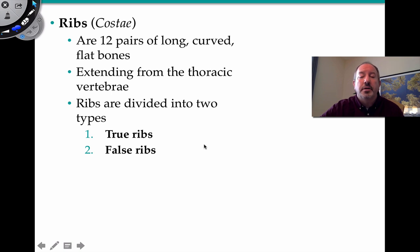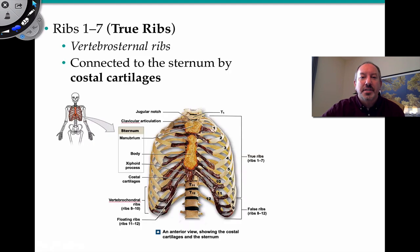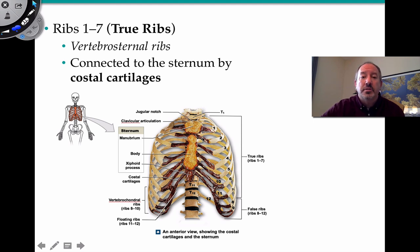The thoracic cage protects the heart, lungs, and thymus gland, and serves as attachment for muscles. Intercostal muscles between the ribs increase and decrease the volume of the rib cage, affecting pressure and enabling breathing. Ribs can be divided into true ribs and false ribs. True ribs, numbers 1 through 7, attach directly to the sternum via costal cartilage.